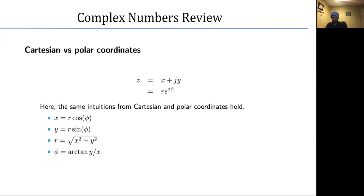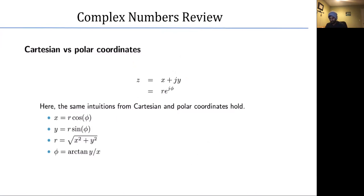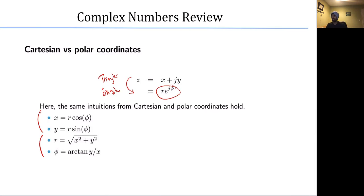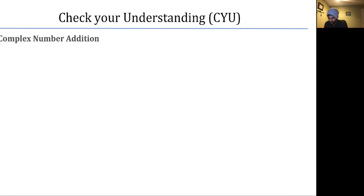Just to recap, when writing a complex number in polar or phasor form, we take x + jy and reduce it to re^{jφ}, where r is the magnitude and φ is the angle. Euler's formula is the link between the phasor representation and the Cartesian representation of a complex number.